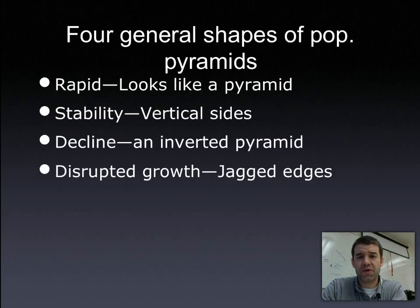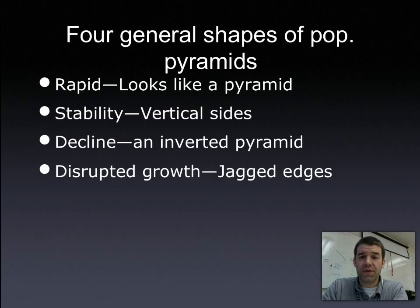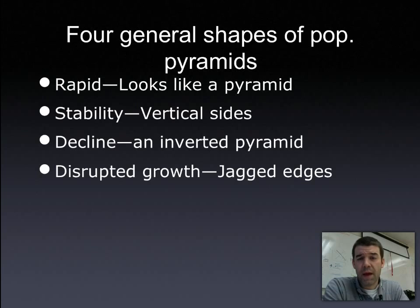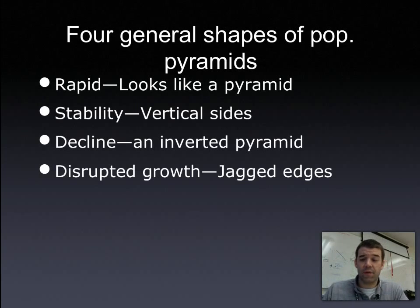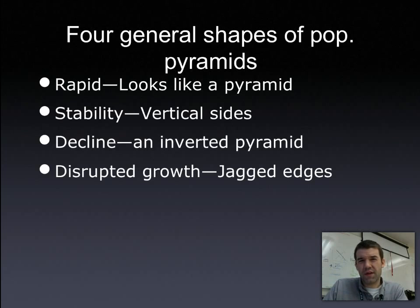There are four basic shapes you should be familiar with and understand what they imply. Rapid growth looks like a pyramid, as seen with Kenya. Stable growth or population stability will have more vertical sides — looking more rectangular. When you start to see a shape like Italy's or an inverted pyramid, you're likely to see population decline. And a fourth example is when you see jagged edges or disruptions in the pyramid — unexplainable disruptions in the natural flow of those bar graphs.